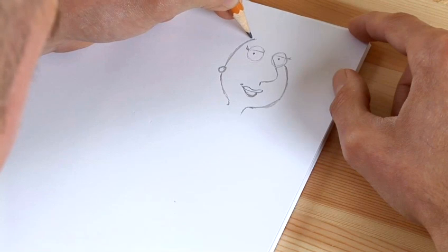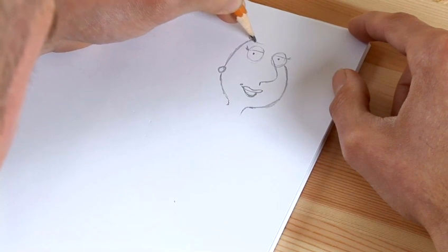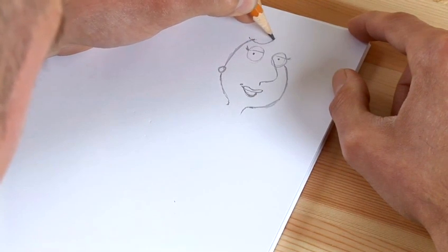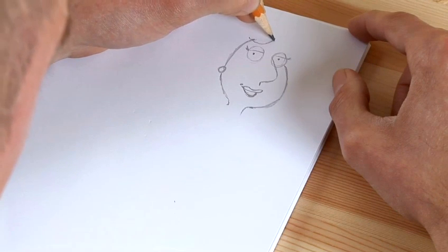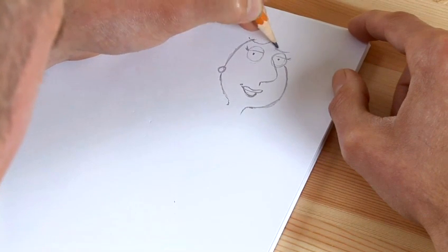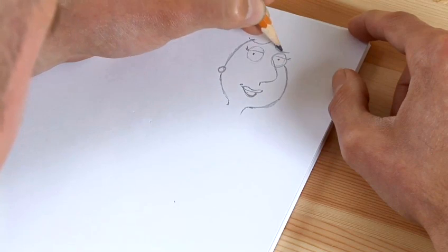And then we're going to do the fringe on her hair, so you do a line curve like that, and another one that comes down just nearly touching the eye, like that.